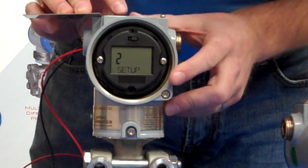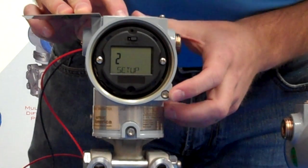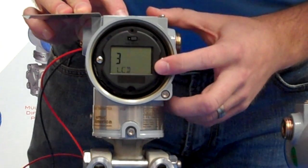Again, going down one more, which is the third menu, push and hold the zero button again, and we'll see the number three, which is the LCD.